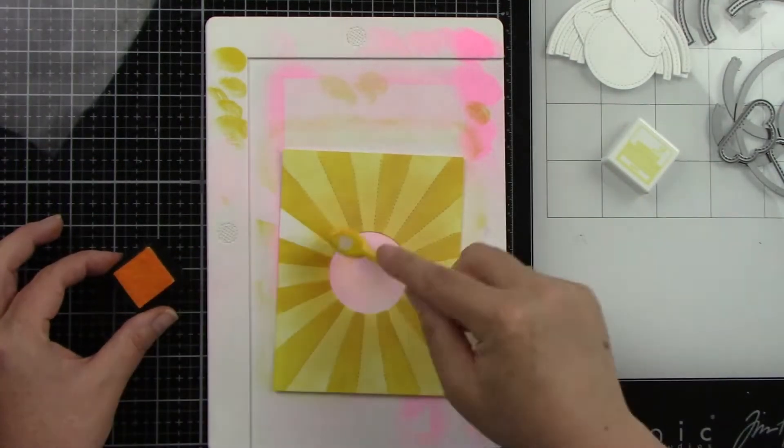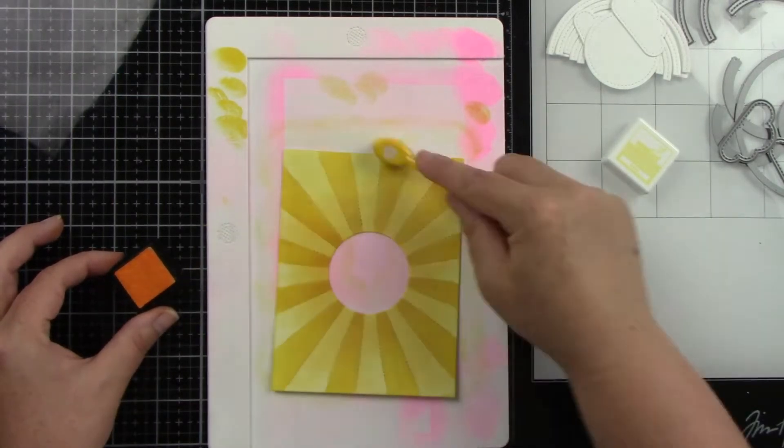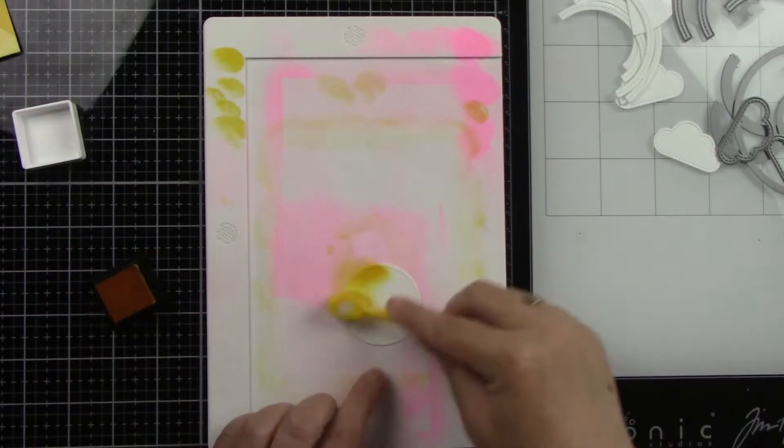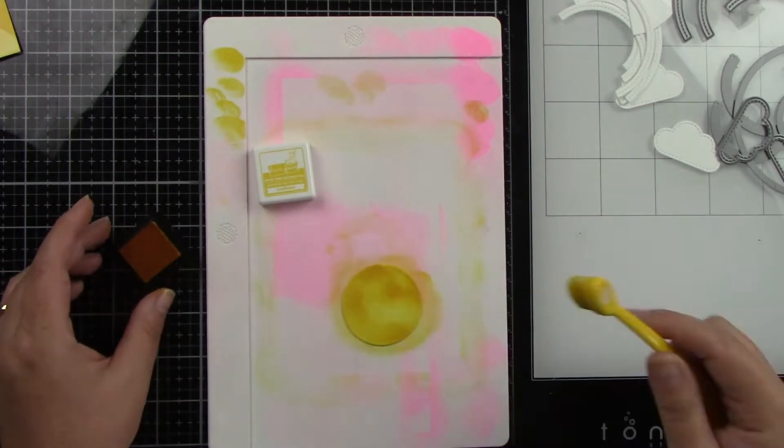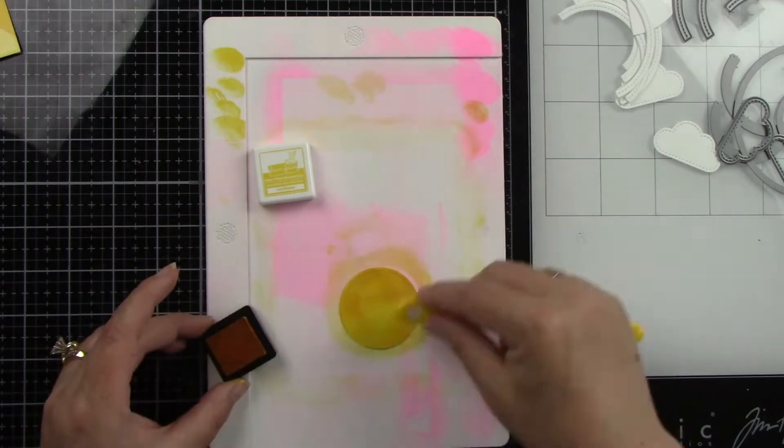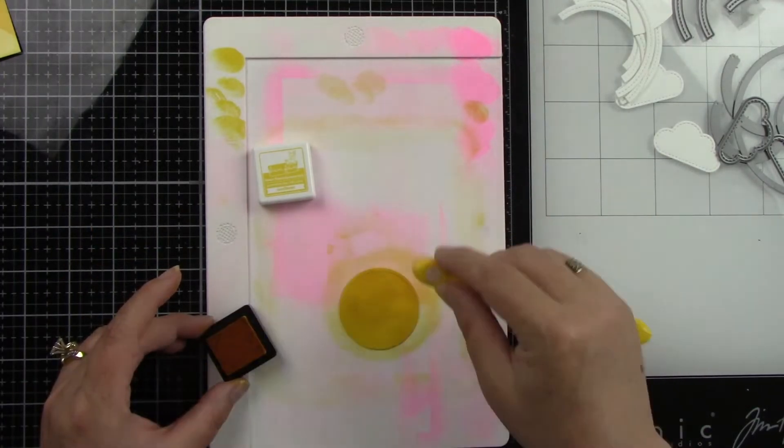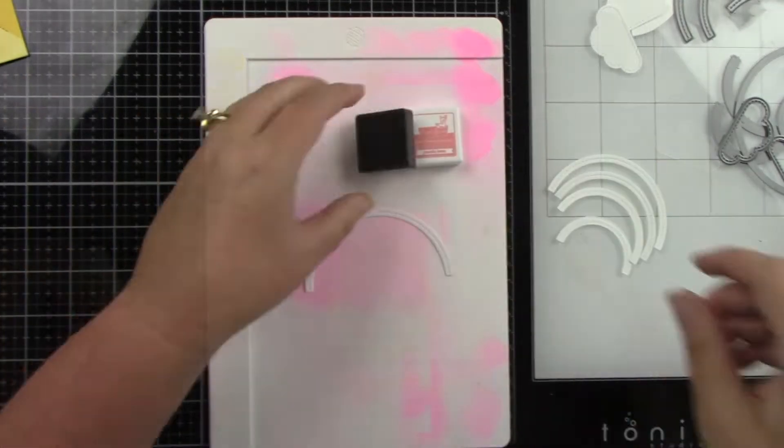Now that inside circle, I am also going to be ink blending with the Sunflower. So I'm going to bring that in and just really ink that up nice and heavy. I actually want that a little bit darker than the Sunflower sun rays that we already inked up. So I'm just going to finish inking that up.